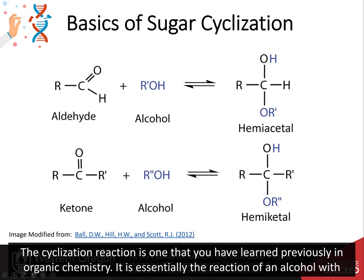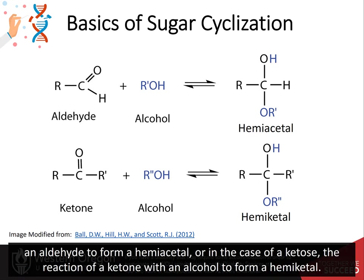The cyclization reaction is one that you have learned previously in organic chemistry. It is essentially the reaction of an alcohol with an aldehyde to form the hemiacetal. In the case of the ketose, the reaction of a ketone with an alcohol will form the hemiketal.